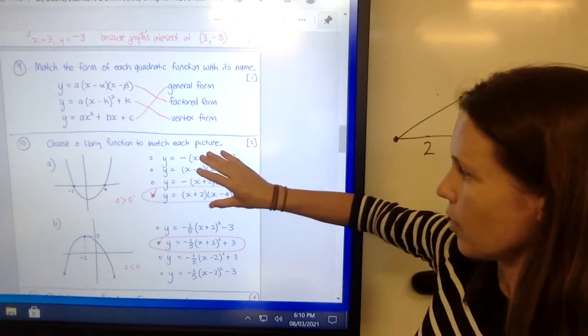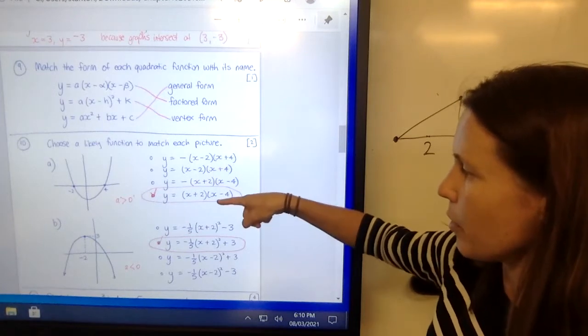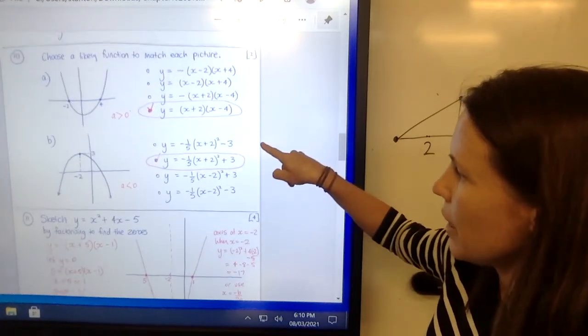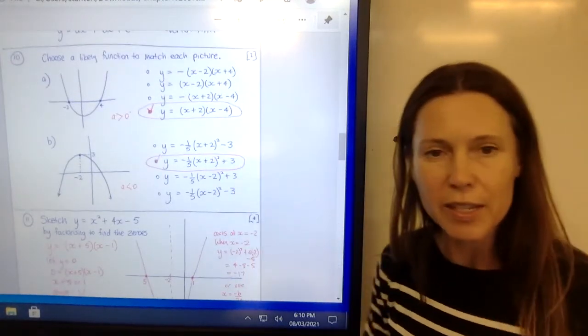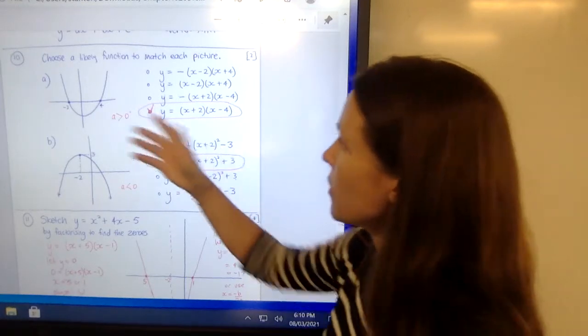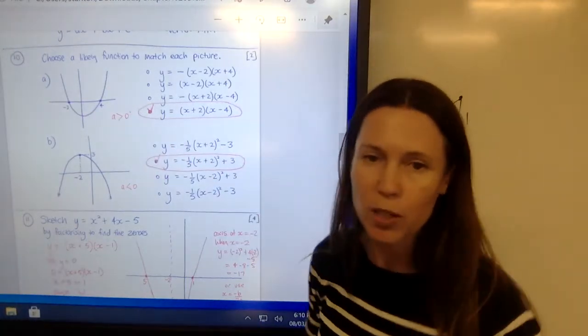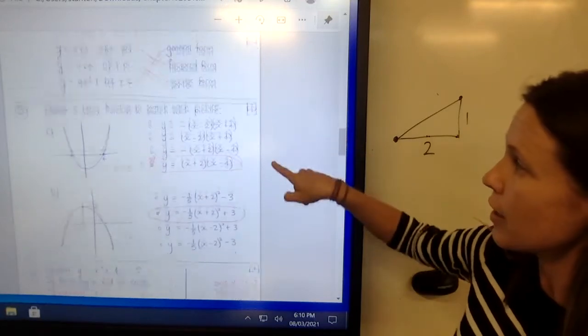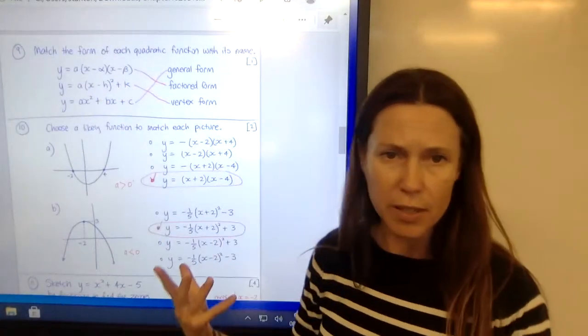Now down here we've got a bunch of parabolas in factored form, and then a bunch of parabolas in vertex form. And it's asked us to choose a likely function to match each picture. So that's just double checking that you know what each of these gives as information.